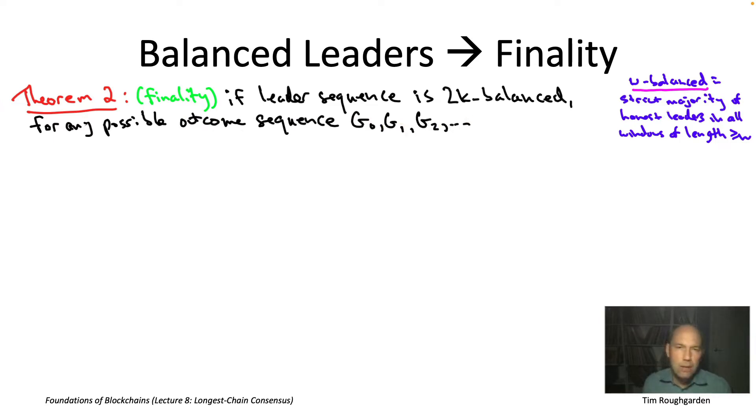So when we say for any possible outcome sequence, we mean the same thing that we meant in theorem one. For a fixed leader sequence, what are the indeterminates? We don't know what Byzantine nodes are going to do. They might do deliberate forking attacks, delay announcements of blocks they created, whatever. So we want to say no matter what the Byzantine nodes do, and no matter how the honest nodes break ties among competing longest chains.